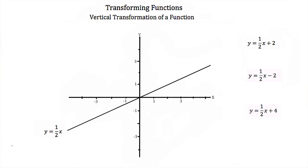Here we're given the equation and the graph of y is equal to one-half times x. This is what we call our parent function because every function we're going to graph after that is similar to this function. Say we wanted to graph y is equal to one-half x plus 2 — this is the same as our parent function except we've added 2.